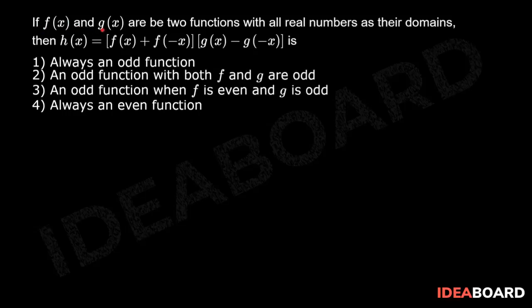If f(x) and g(x) are two functions with all real numbers as their domains, and h(x) = [f(x) + f(-x)] · [g(x) - g(-x)].